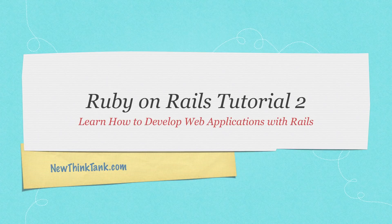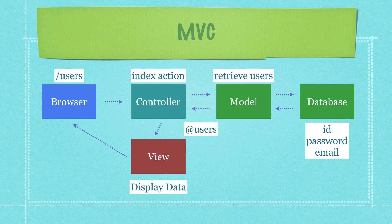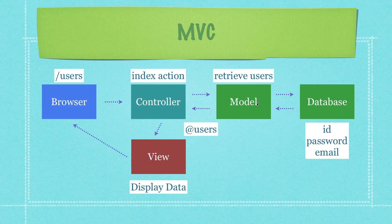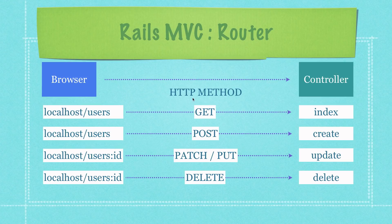We have the model-view-controller — that is the basis of almost everything inside of developing a Rails web application. When the user goes to the browser and types in 'users', that's going to call a specific method inside of the controller — specifically the index action. The controller tells the model to get all the users from the database. The database returns the ID, password, and email back to the model, stored in an instance variable called 'users', which the view uses to display in the browser. You'll also have specific HTTP methods: GET, POST, PATCH, PUT, and DELETE.